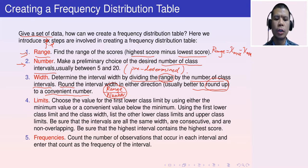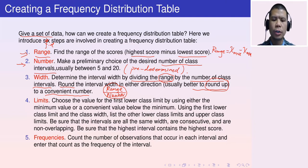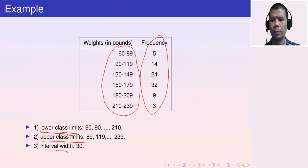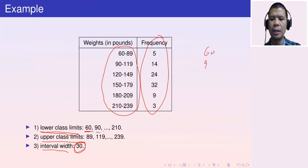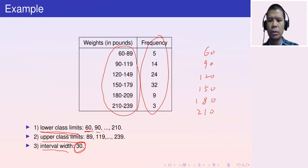Step four is to determine the class limits — the lower and upper class limits. As you can see from this table, the interval width is 30 and the lower class limits are 60, 90, 120, 150, 180, and 210. Their differences are all 30, which equals the interval width.